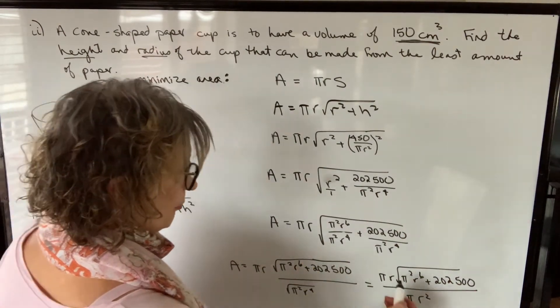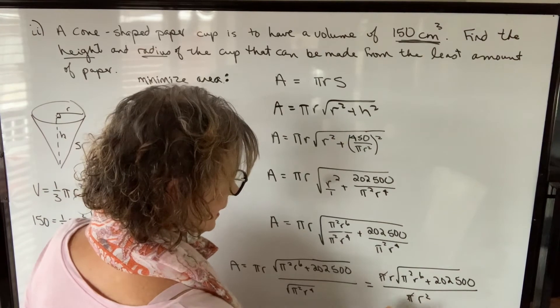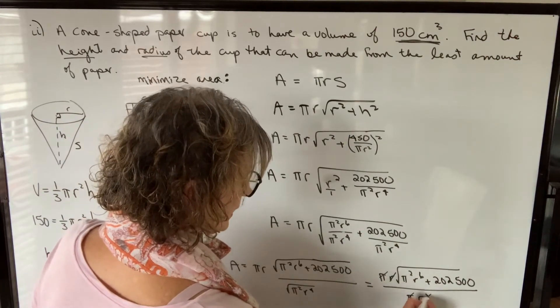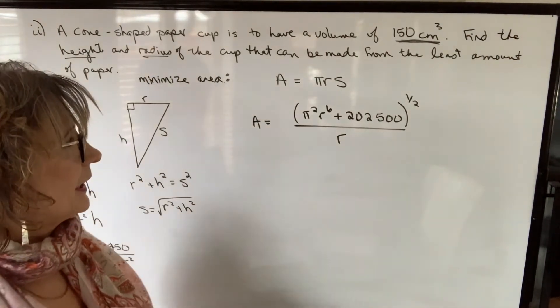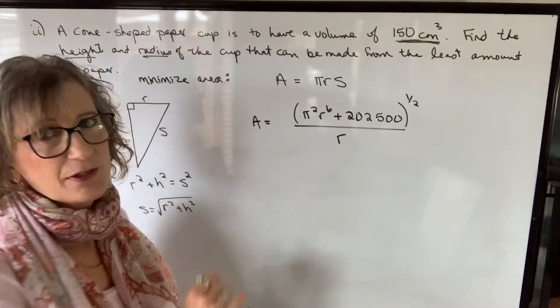I can't do anything with this, but then that allows me to cancel the pi and allows me to cancel that r and leave that r. So once I clean all of that up, I end up with this as my function for area.